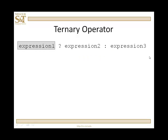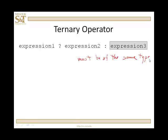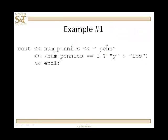The way this works is: the compiler will evaluate expression one. If it's true, then expression two is what is returned by the operator. And if it is false, then expression three is what is returned — returned if true, returned if false. Let's take a look at a couple of examples.